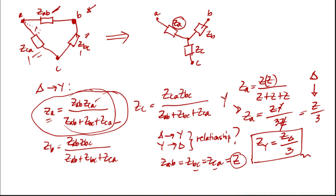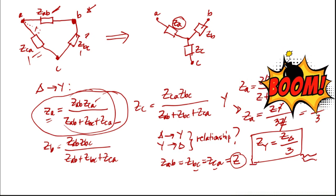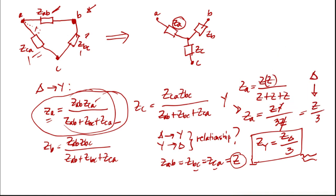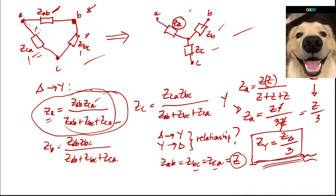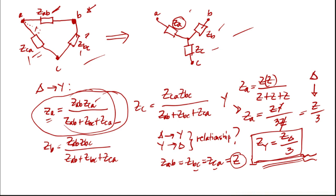So this is the answer. Every time you are given a value — whether it is Y connected or delta connected — if the impedances are equal, we just use this relationship: Zy equals Zdelta divided by 3. That's it — thank you for watching this video. Please subscribe, share this video with your friends, and you can also comment in the comment box.